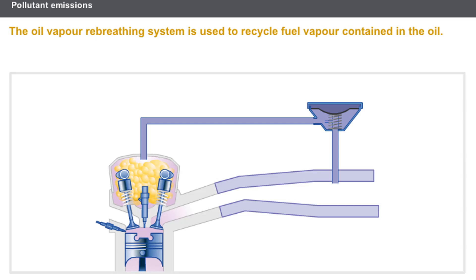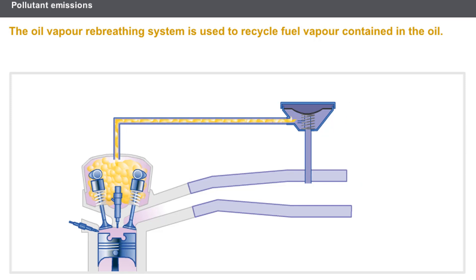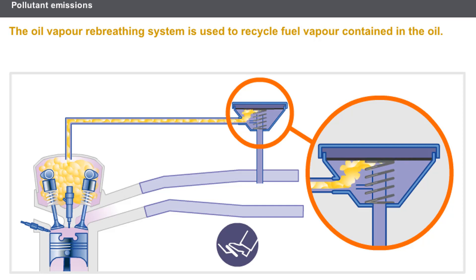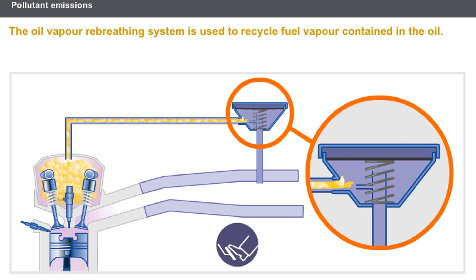The oil vapour rebreathing system is used to recycle fuel vapour contained in the oil. The vapours are routed inside the inlet manifold via a regulating valve and are finally burnt during the combustion phase. Large amounts of oil vapours are recycled inside the inlet manifold, while small amounts are recycled via a calibrated jet.